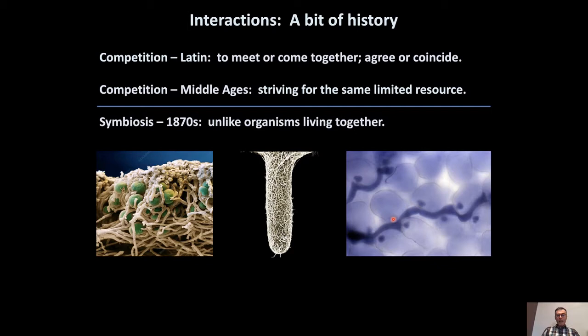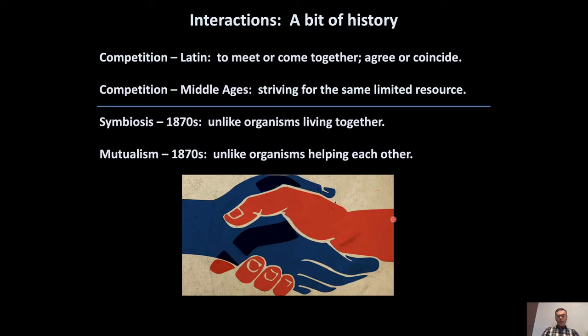The 1870s was a time of change. There was a lot of turmoil in society — this is when Karl Marx was publishing books about capitalism, and the Industrial Revolution had been going on for a while, with rather appalling conditions in industrialized societies. There was also discussion among biologists of the term mutualism, emerging in the 1870s from Van Beneden, who worked on marine organisms and talked about unlike organisms helping each other out.